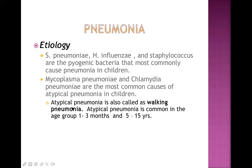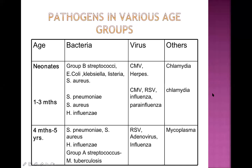Atypical pneumonia is given this name because the signs and symptoms are completely different from typical bacterial pneumonia — patients don't have high fever or may have no fever at all, cough is very troublesome and dry, and the patient doesn't look very sick. That's why it's also known as walking pneumonia. It is quite common in the age group of 5 to 15 years. Fever and sputum production are not commonly seen in atypical pneumonia.